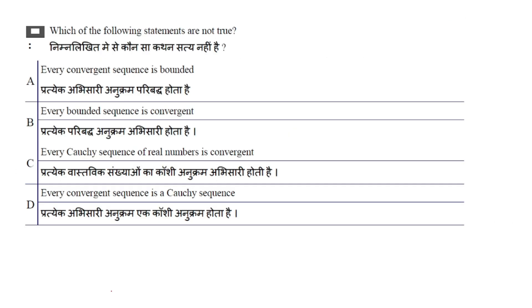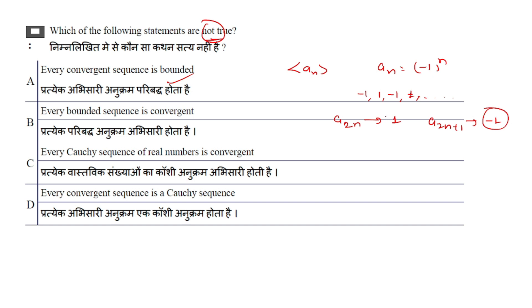Next question: which of the following statements is NOT true? Option A: every convergent sequence is bounded — this is true. Option B: every bounded sequence is convergent. Consider aₙ = (−1)^n, which gives the sequence −1, +1, −1, +1, ... The range is {−1, 1}, so it is bounded.